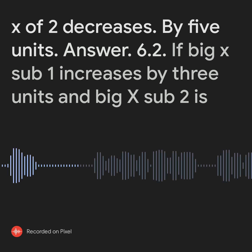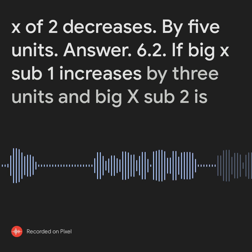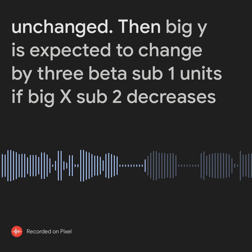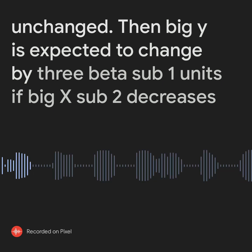Answer 6.2. If X sub 1 increases by 3 units and X sub 2 is unchanged, then Y is expected to change by 3 beta sub 1.